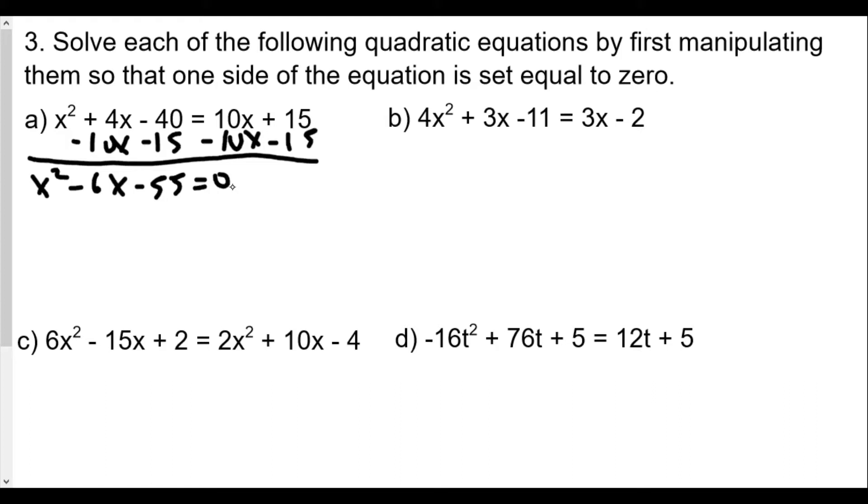This is the form we want. We always want to make sure when we solve quadratic equations, we set our equation equal to zero, so now we factor, we can then set each factor equal to zero. Now we're trying to find two numbers that multiply to 55 and subtract to 11. We have x and x, and the numbers will be 11 and 5.